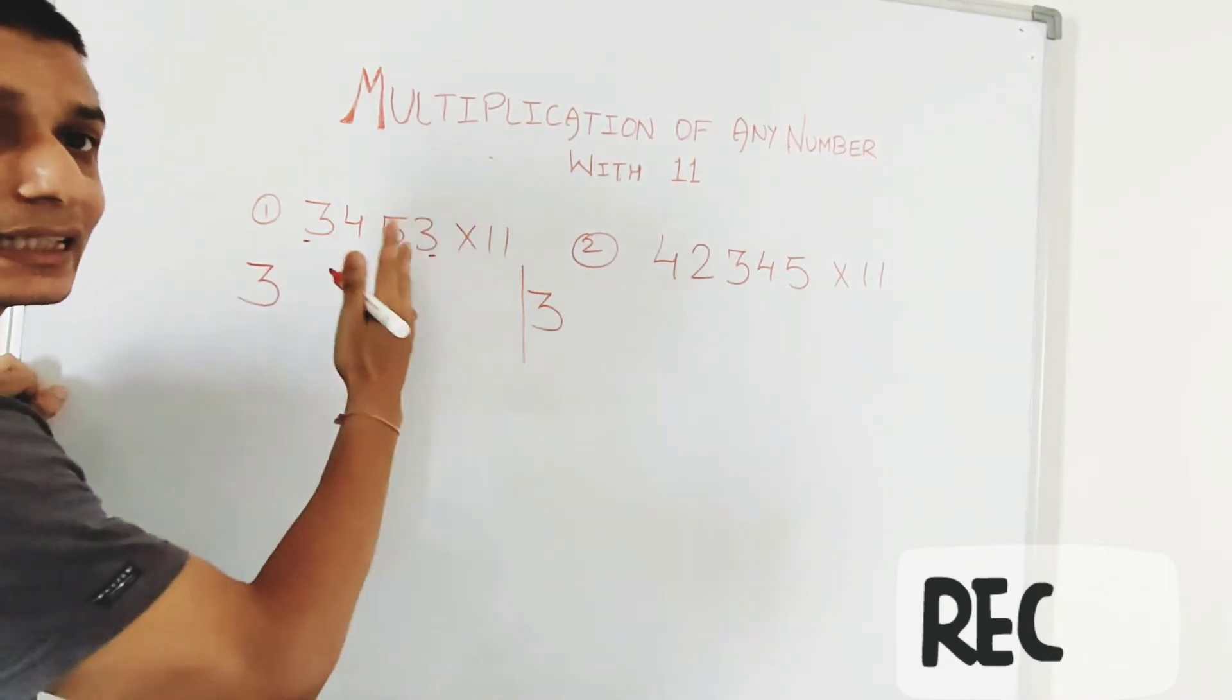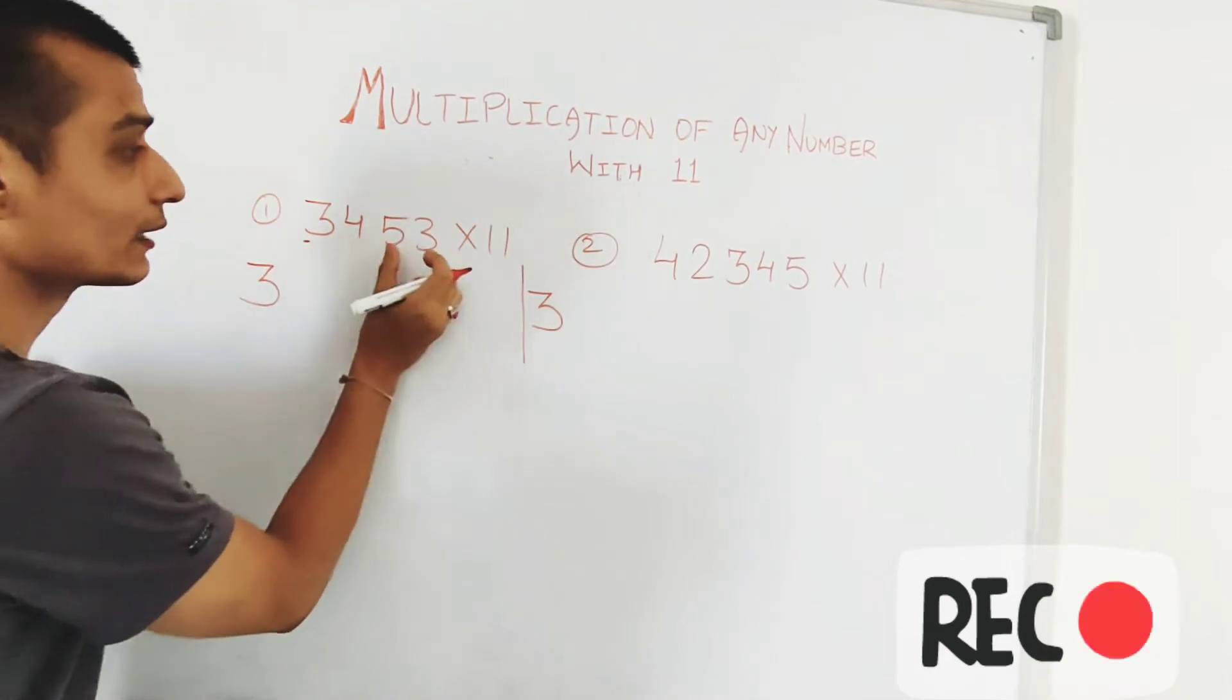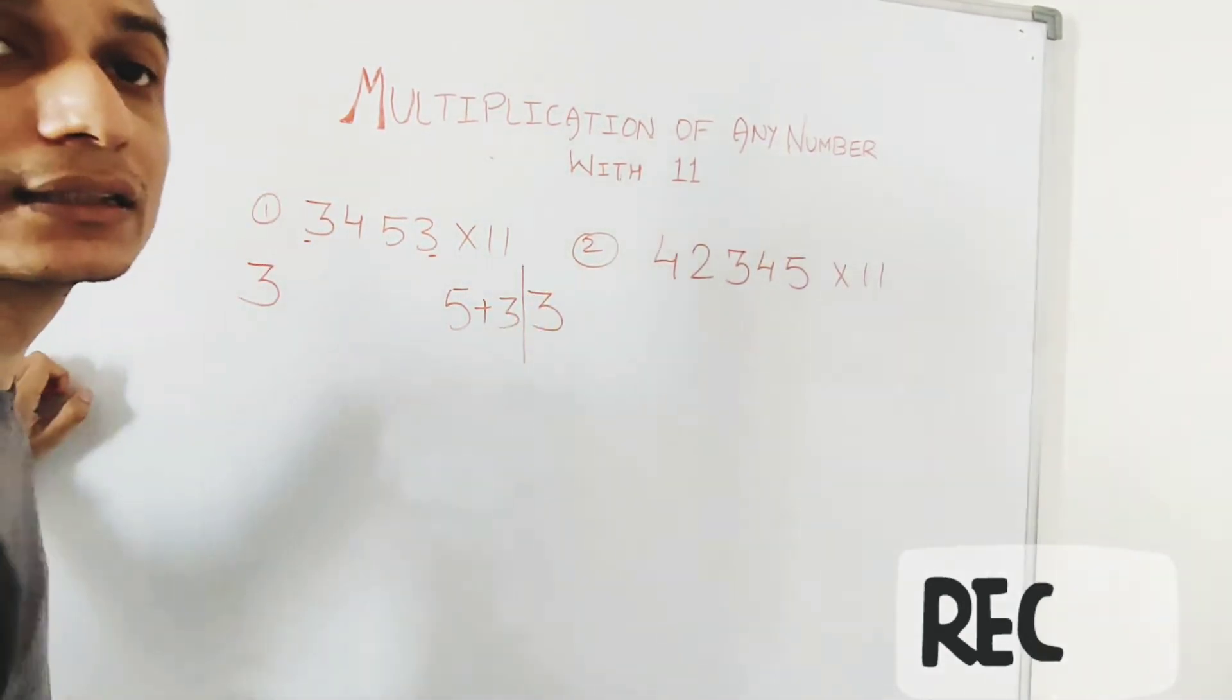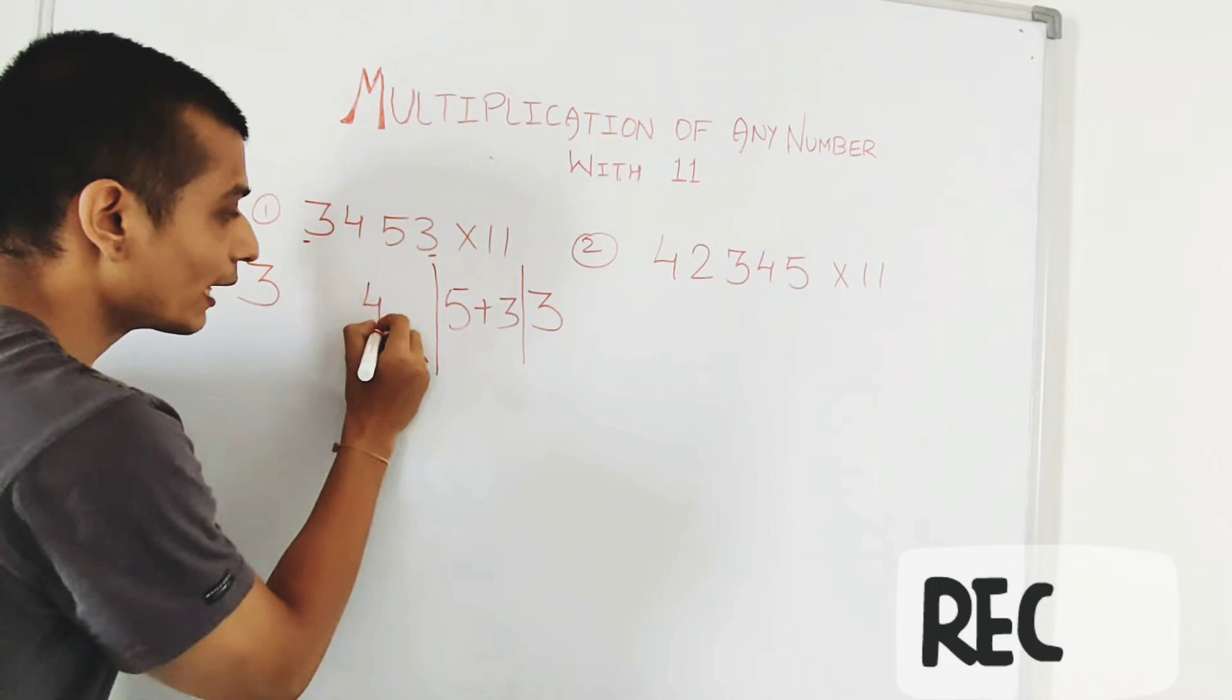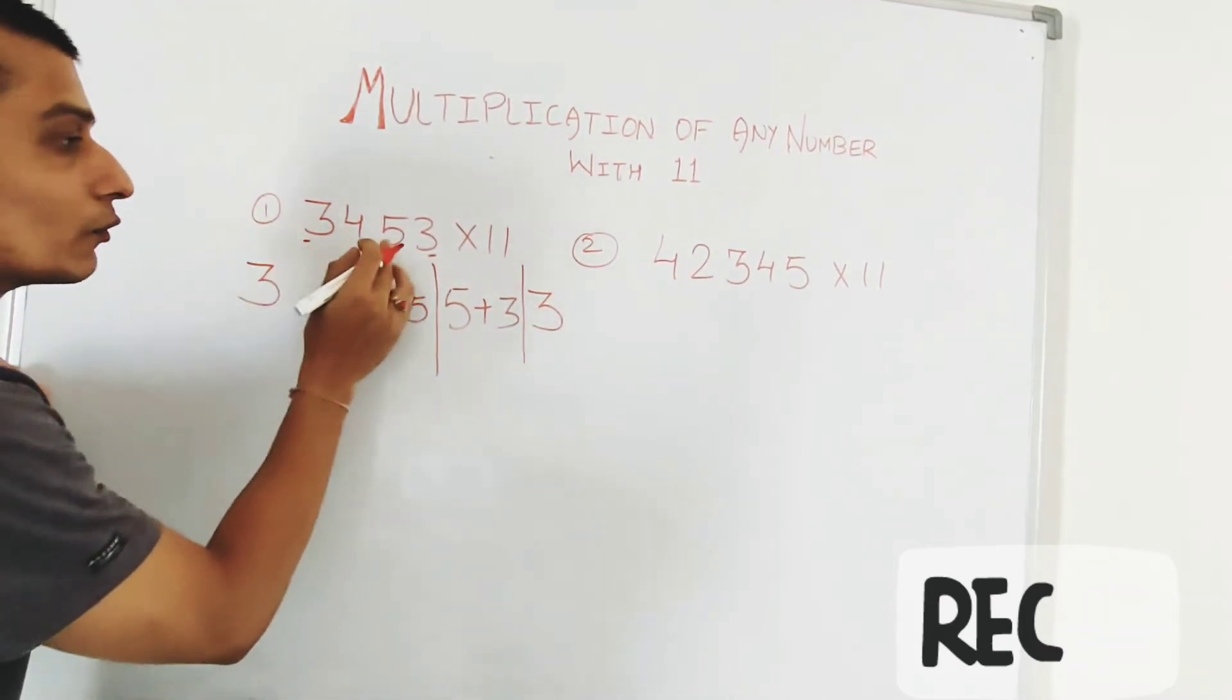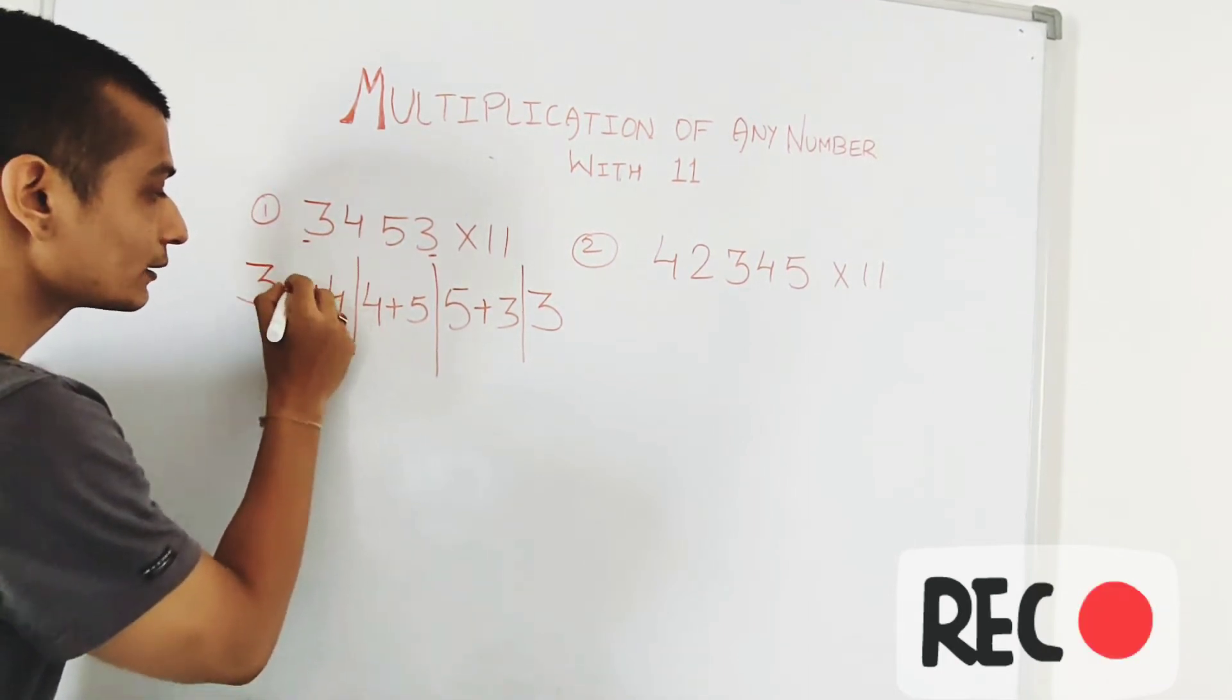First of all, I will start with the right hand side. So, here we have 2 numbers, 3 and 5 on the right hand side. So, I will write 5 plus 3. Then, we will write 5 and 4. Then we will write 4 and 3. So, 4 plus 3.